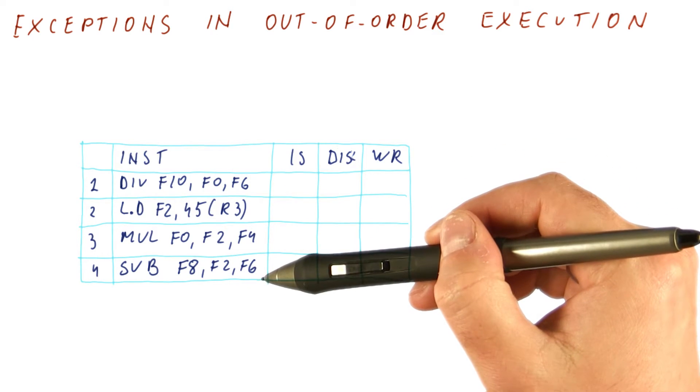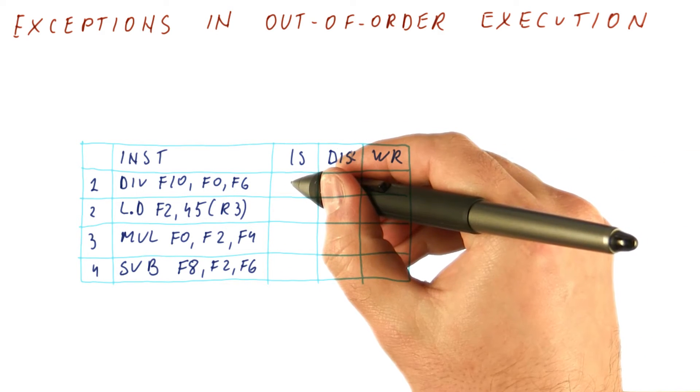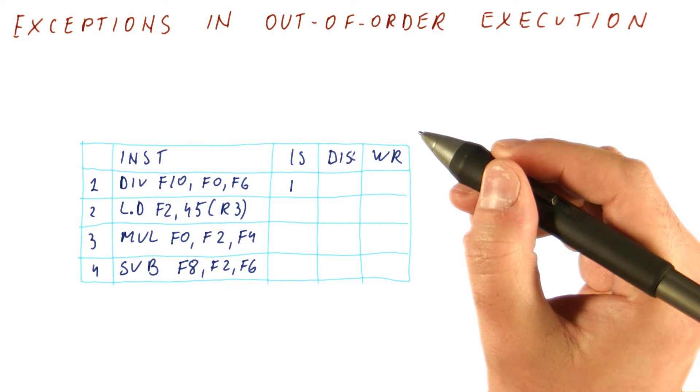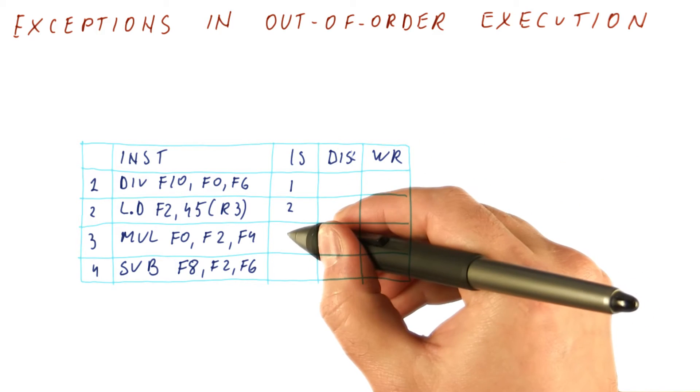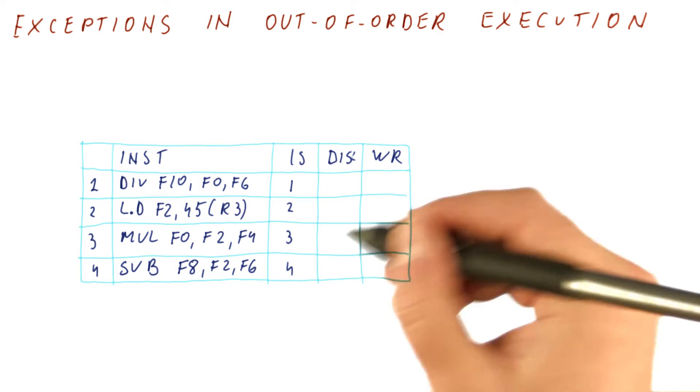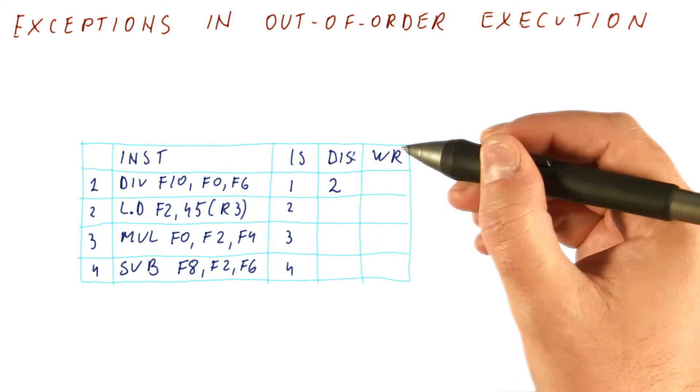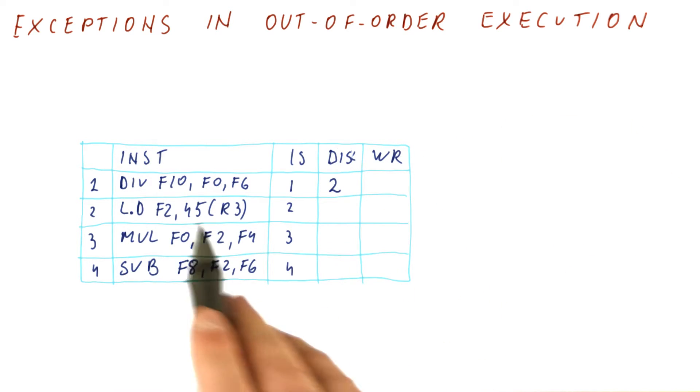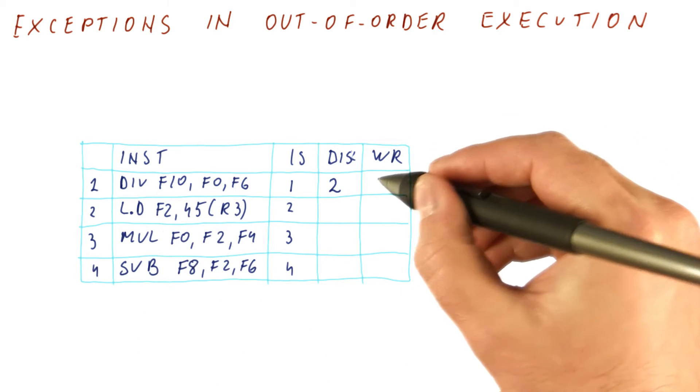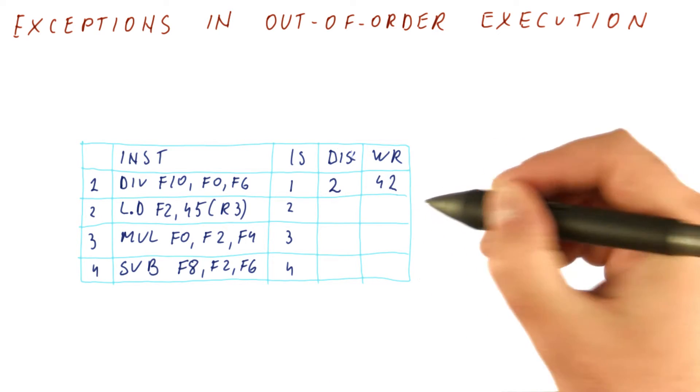Let's look at these four instructions and how they execute. This first instruction is going to issue in the first cycle. And let's say we just are able to issue everything like this. This instruction will dispatch in the second cycle. Let's say it takes 40 cycles for a divide to finish. So it's going to write the result in cycle 42.